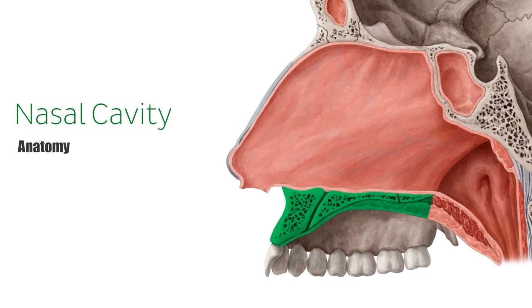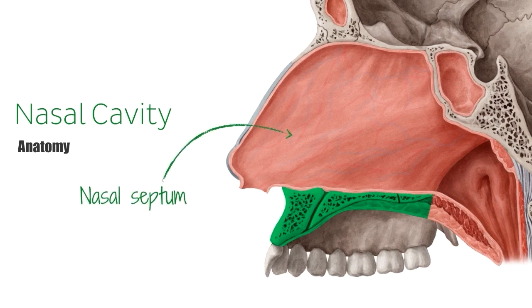Let's have a brief look at the anatomy of the nasal cavity. We each have two nasal cavities, each separated from the other by a nasal septum. The nasal septum, pointed out by the green arrow, is made of septal cartilage as well as two bones of the skull. These two bones — the vomer and the ethmoid bone — can't be seen in this image, but would be located behind the mucosa covering the bones and cartilage.